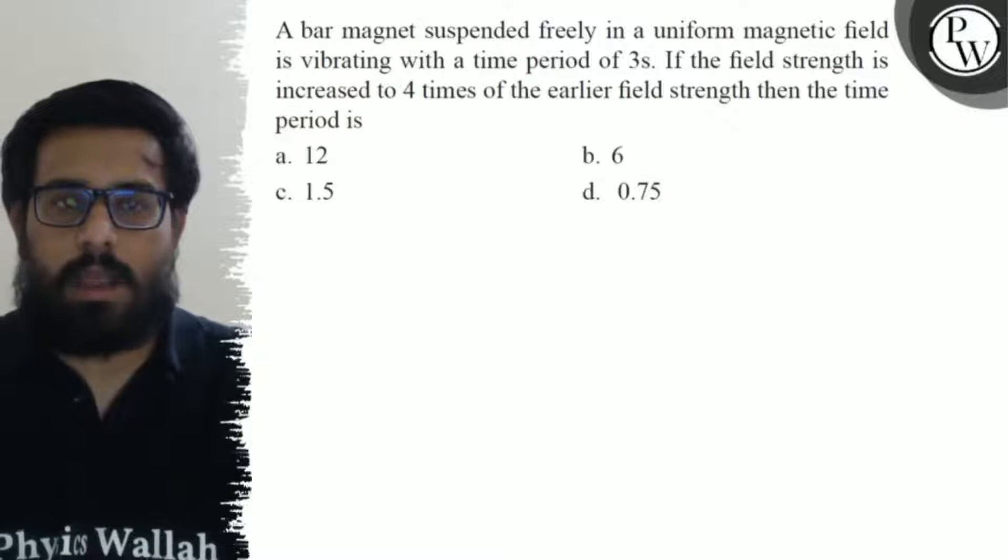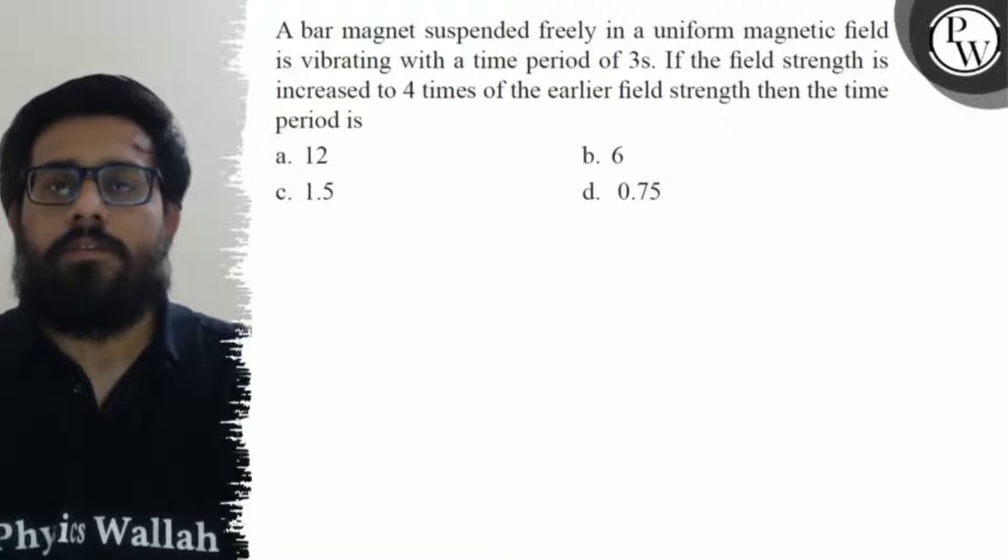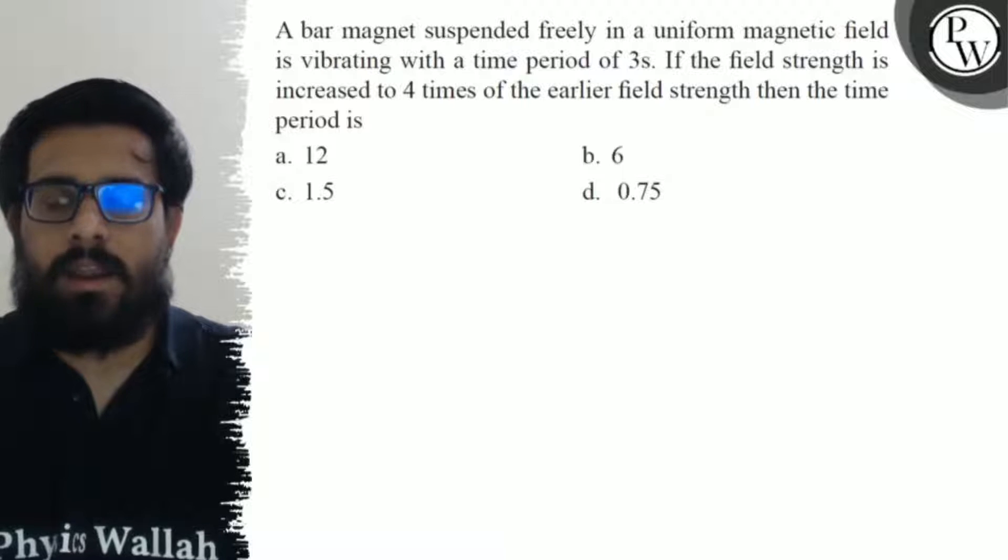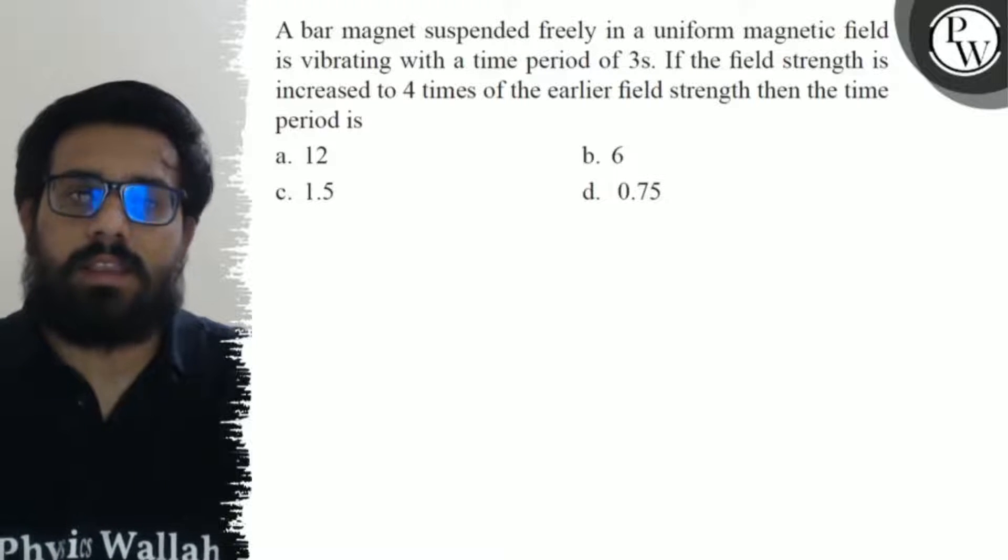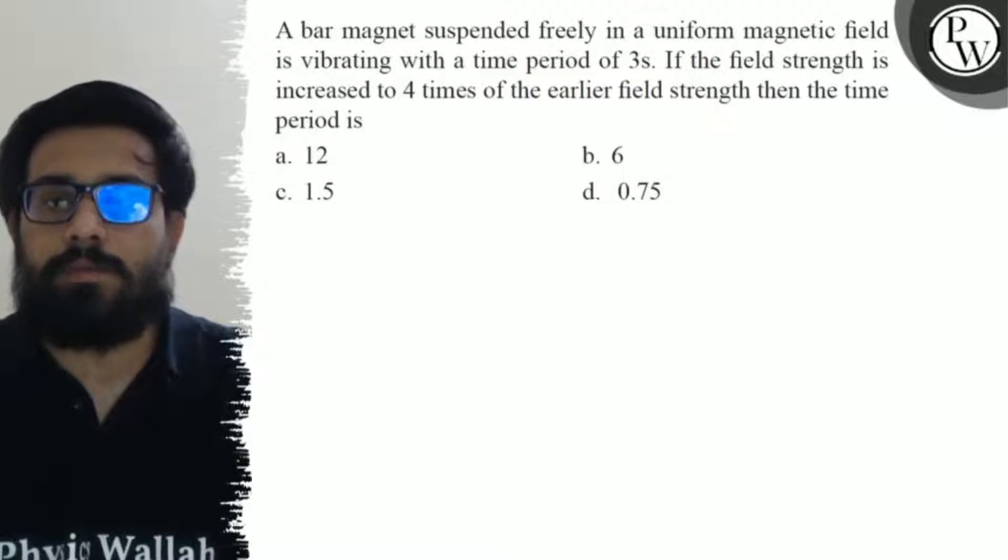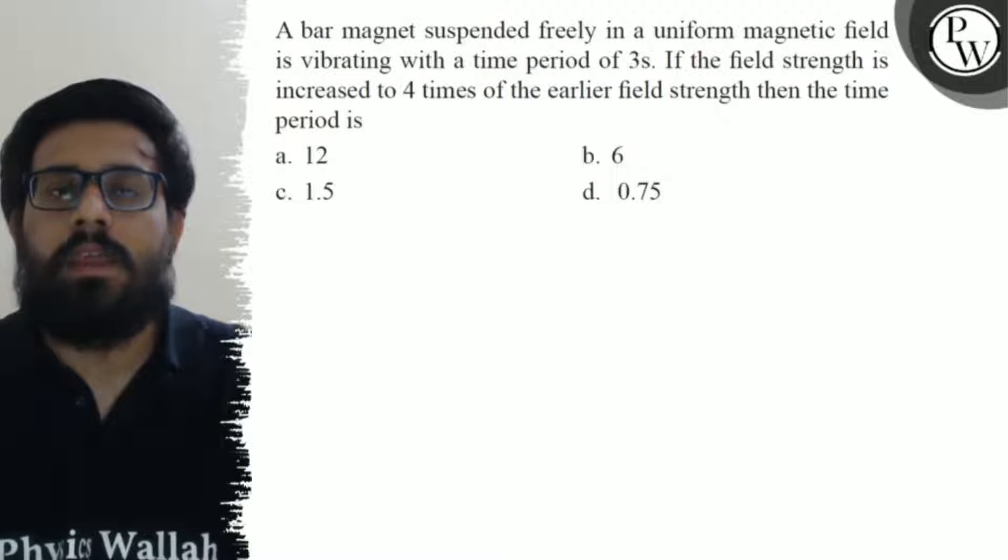Hello guys, let's see the question. A bar magnet suspended freely in a uniform magnetic field is vibrating with a time period of 3 seconds. If the field strength is increased to 4 times of the earlier field strength, then the time period is